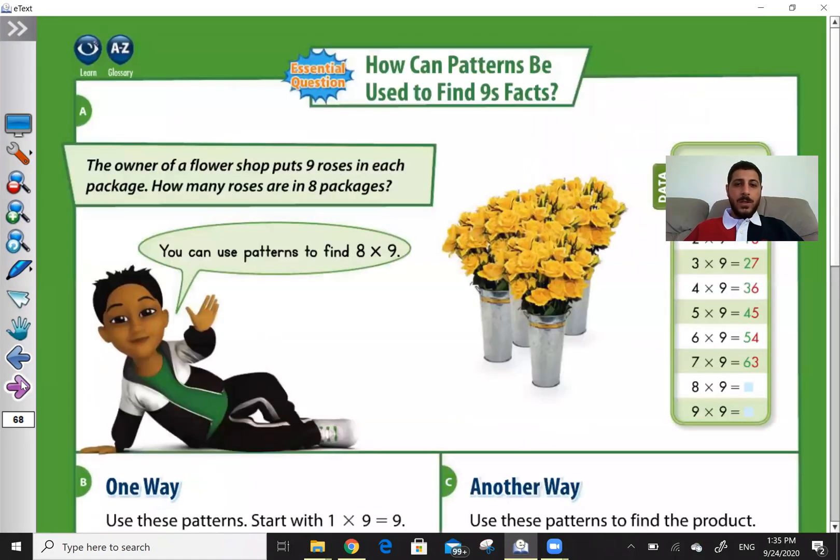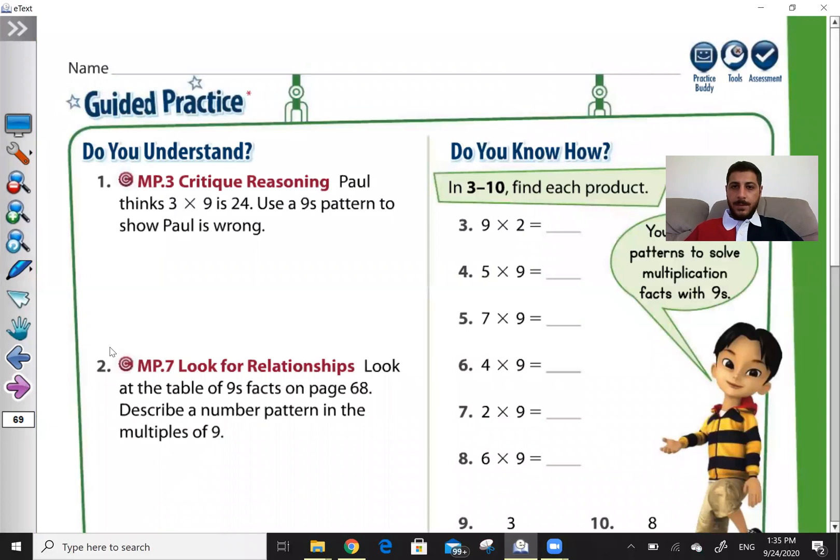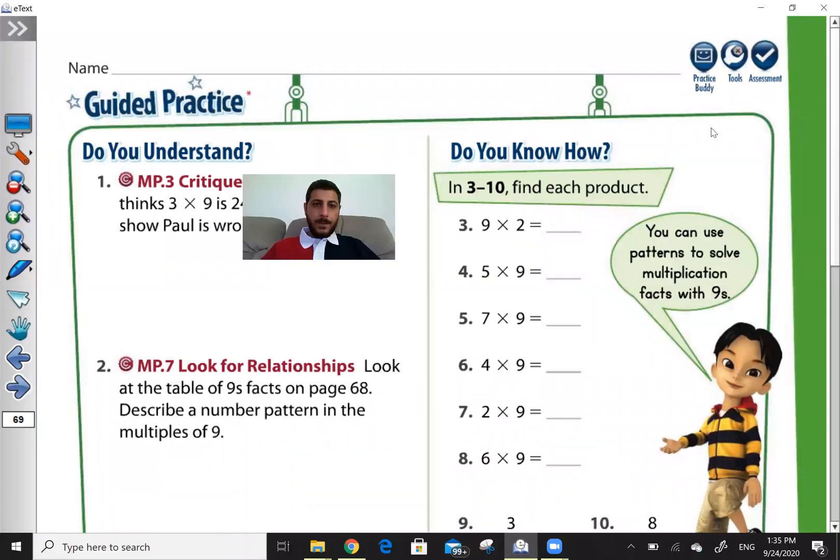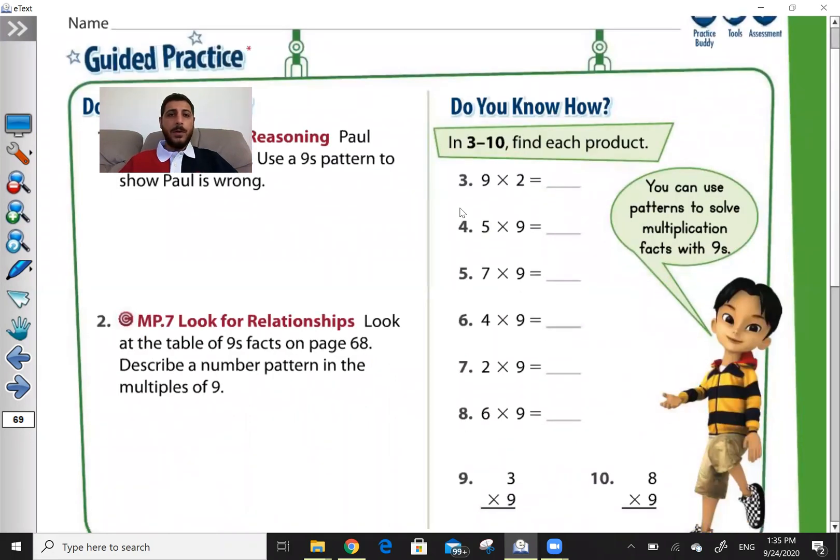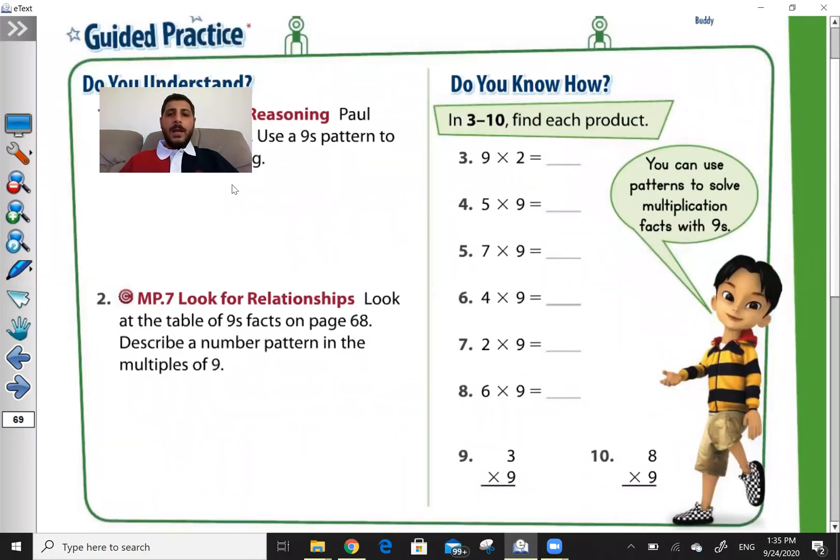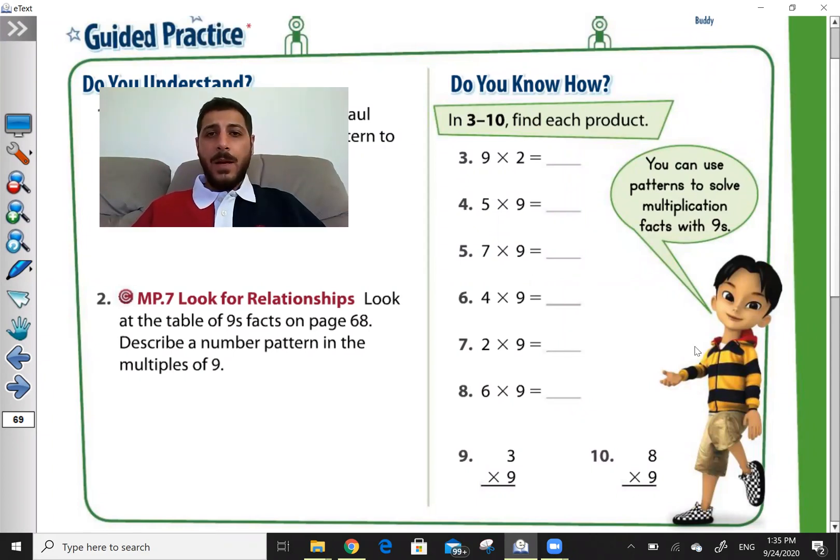Let's move to the questions. So in question number 3 to 10, find each product. Product means, as we said before, is the answer of multiply.